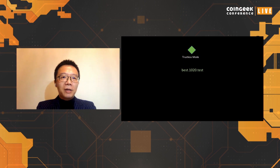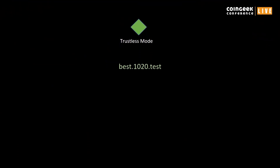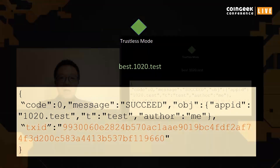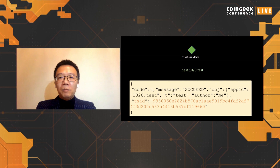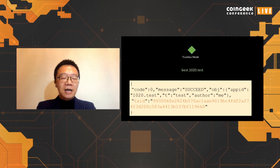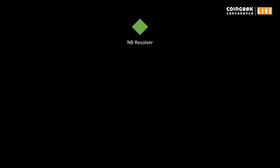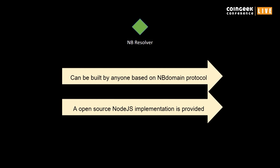People may ask, how can I trust the resolver's output? Actually, you don't have to. NB resolver runs in trustless mode. The user or app can always verify the resolver's output. For example, there is a subdomain best.1020.test, and you may notice there is a property called txid, which identifies the transaction associated with this subdomain. The user of the app can always use the txid to verify the information from the blockchain. This design makes sure the resolver's output can always be verified. Since NB Domain is a public protocol, the resolver can be built by anyone, and an open source implementation is also provided to save developers time.